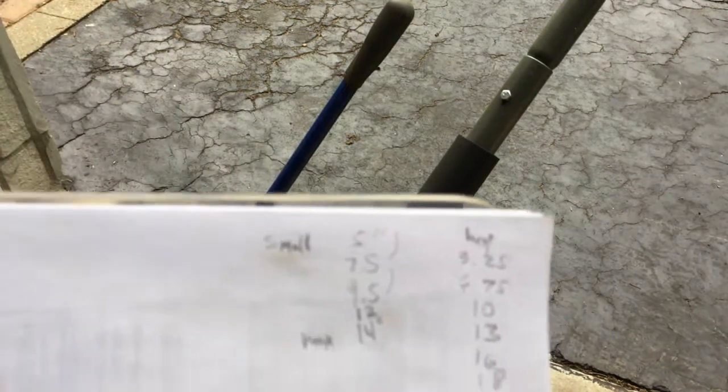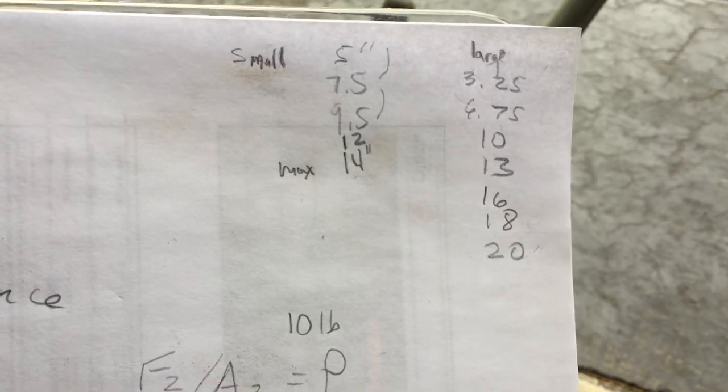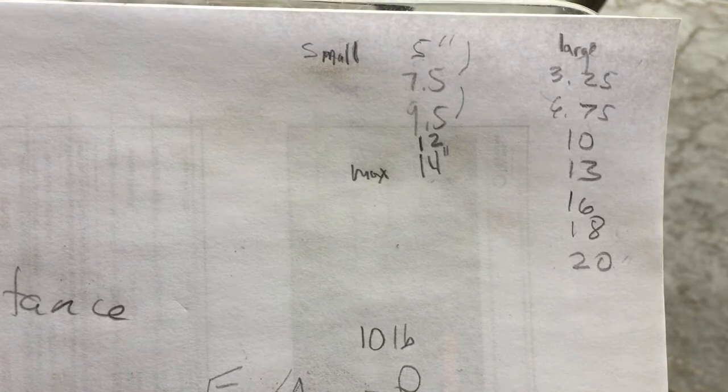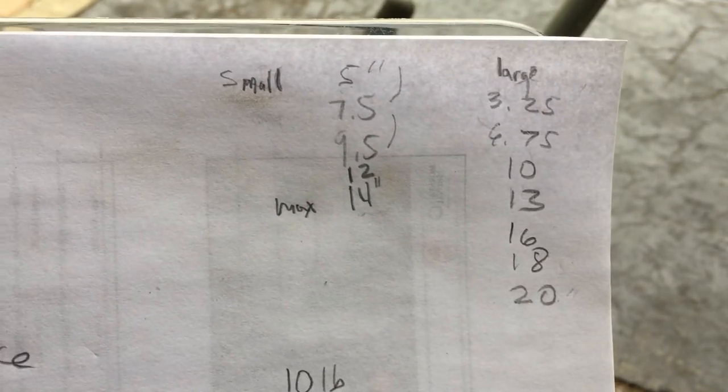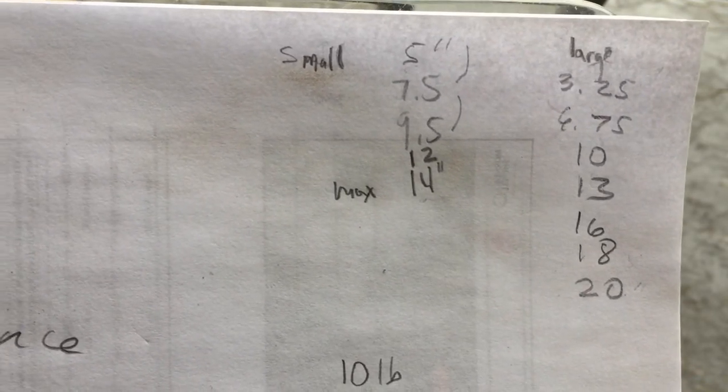Alright, so back to the numbers. So the Harbor Freight will go up to 20 inches, six inches more than your standard cheap-o jack, and it starts off 1.7 inches lower than your standard jack. That's the kind of difference you need in certain cars.